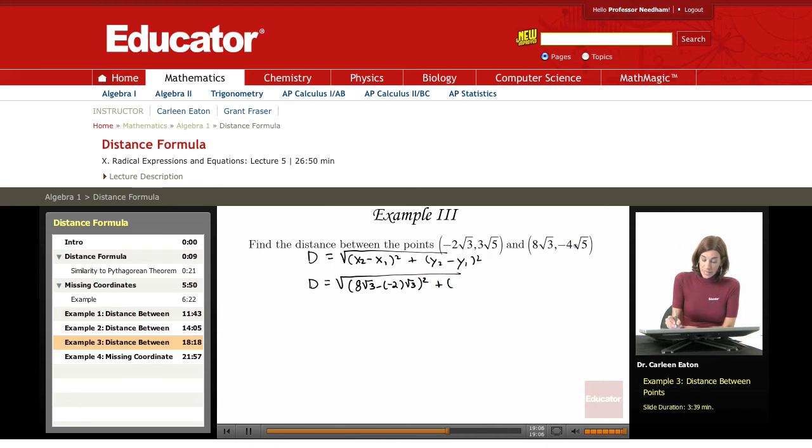Now, y2, that is negative 4 radical 5, minus y1, which is 3 radical 5. This entire expression is squared.